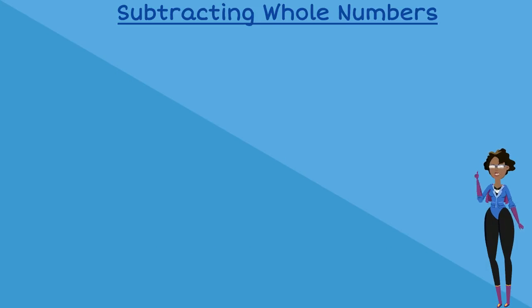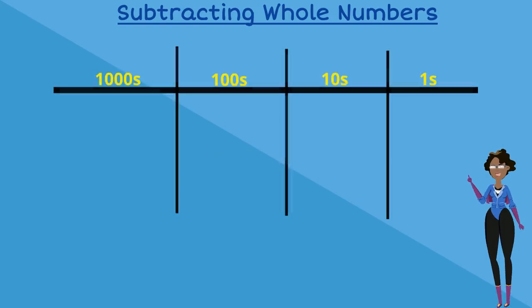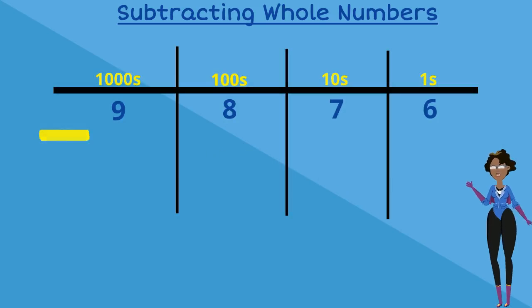Let's do our first example. 9876 take away 6724 is equal to what? Let's put our number sentence into our place value chart and start to subtract from our ones column first.